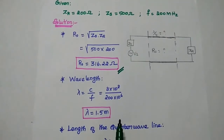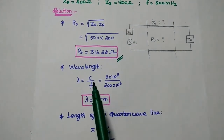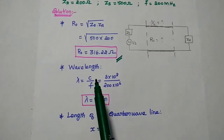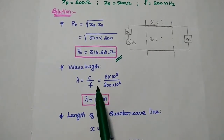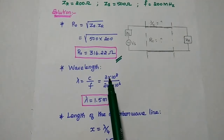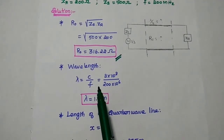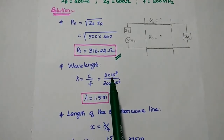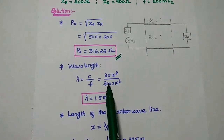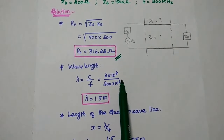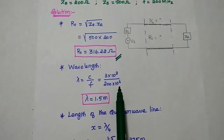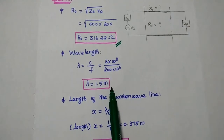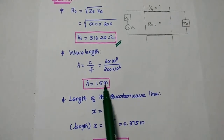Next we are going to find out the length of the transformer. For that, we get the wavelength lambda equal to C by F. Substituting the values: C is the velocity of light, 3 into 10 to the power 8, divided by 200 into 10 to the power 6, that is the frequency value. Then we get the wavelength lambda equal to 1.5 meter.